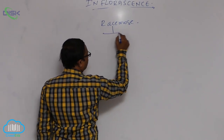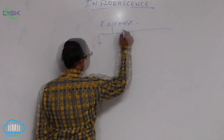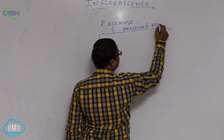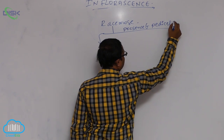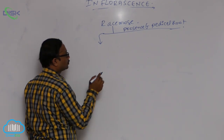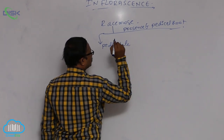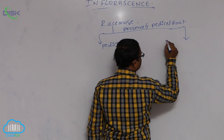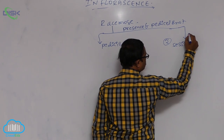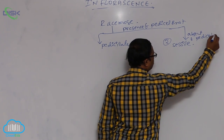Racymose inflorescence is of two types, based on the presence or absence of pedicels. Based on that, racymose inflorescence is classified as: first, pedicillate, and second, sessile. Sessile means the pedicels are absent.